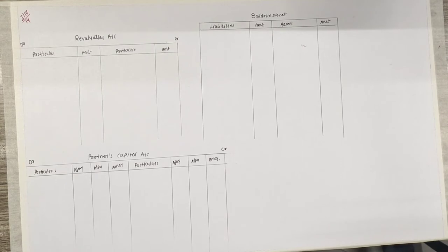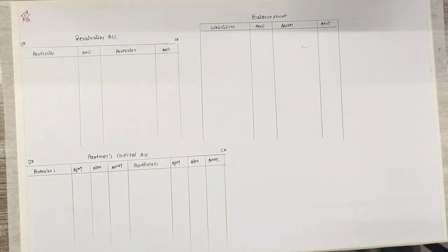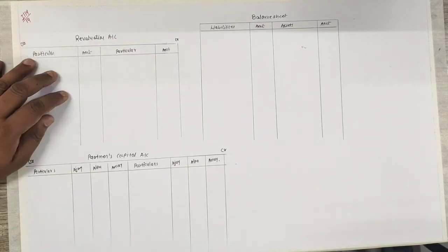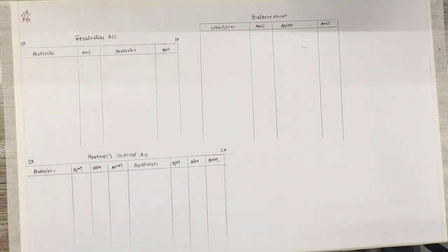Hello students, good morning. Hope you all are fine. So we start our accounts. We are in chapter 6. Last we have seen 1 to 13 relations. Today we have seen relation number 14. We have made some accounts like revaluation, capital and balance sheet. Let's see what the sum is.